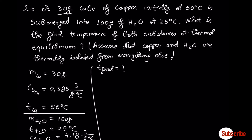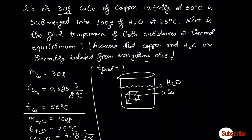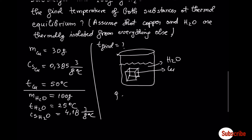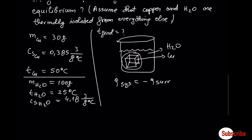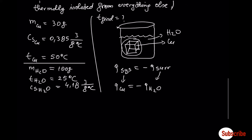Next example dealing with heat transfer: a 30 gram cube of copper initially at 50°C is submerged in 100 grams of water at 25°C. What is the final temperature at thermal equilibrium, assuming copper and water are thermally isolated? The copper is submerged in water. The relation is Q of the system equals minus Q of the surrounding. Copper is the system; water is the surrounding. So Q of copper equals minus Q of water.